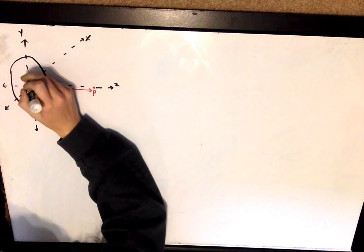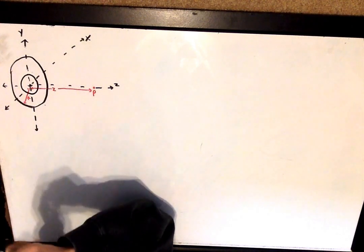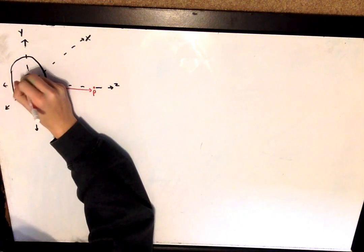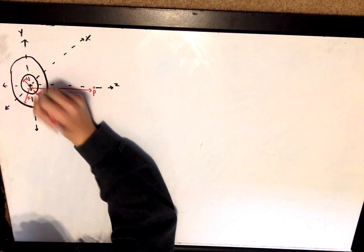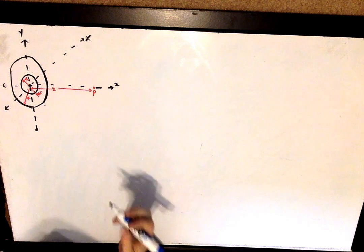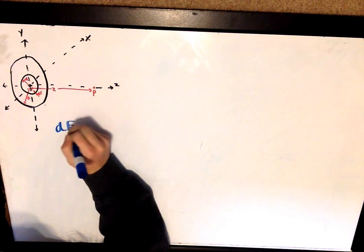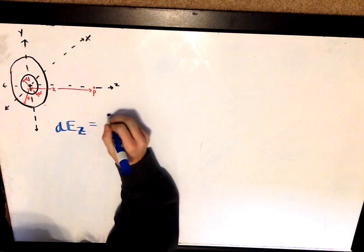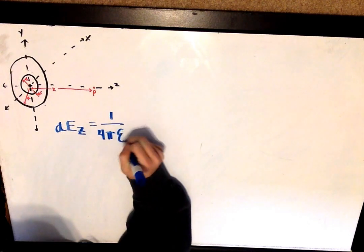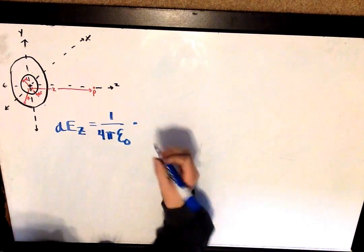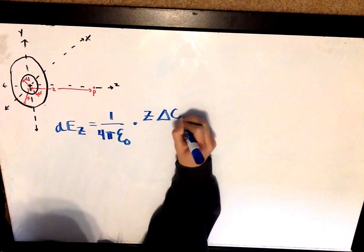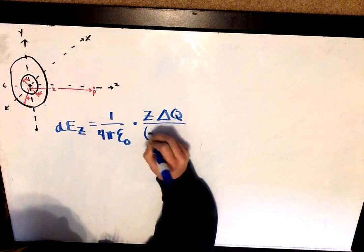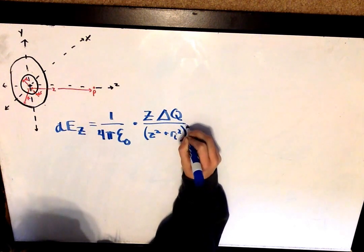If I draw one ring encompassed by this disk, we can say that the distance from the center to this ring is Ri, and the thickness of the ring, which is the line I drew right here, can be written as dr. Therefore, the electric field from this small ring in the disk of charge can be written as the electric field in the z-direction equals k, which is 1 over 4π ε₀, times z times delta q over (z² + Ri²) to the 3/2.